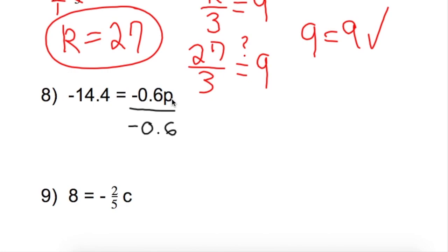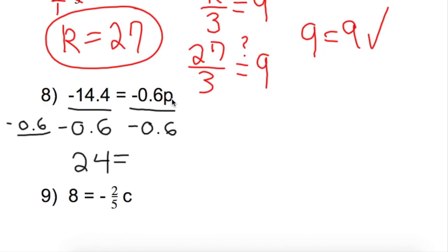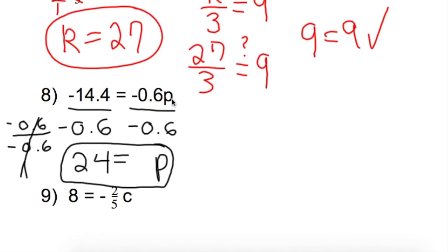Whatever you do on one side, you also have to do on the other side. Negative 14.4 divided by negative 0.6 gives me 24. On the right side, if I divide anything by itself, it always gives me 1. So negative 0.6 divided by negative 0.6 gives me 1, which leaves 1p. Just like the invisible coefficient — we can erase the 1, and it's the same as just p. So p equals 24.